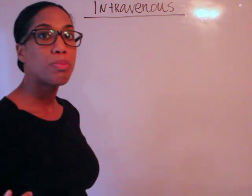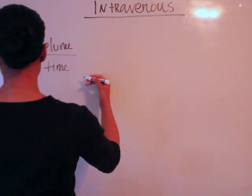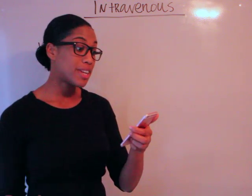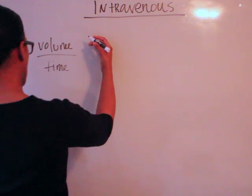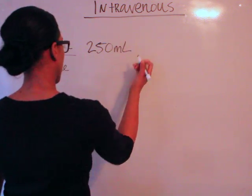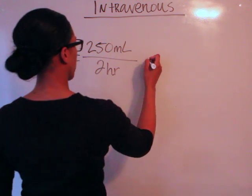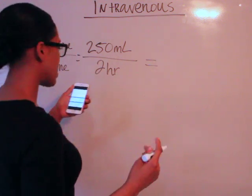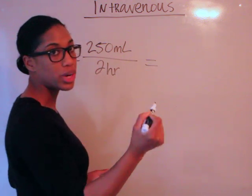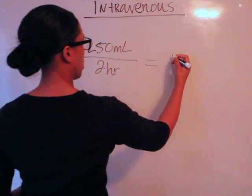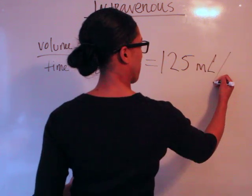Let's work through a real case scenario. The problem says: a patient receives 250 ml of normal saline in two hours. What is the hourly flow rate? So we have 250 ml in two hours. We need to divide 250 ml by 2 hours, and that gives us 125 ml per hour.